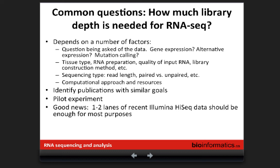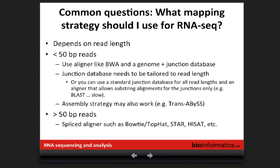The throughput of the HiSeq platform continues to increase — you can get a remarkable amount of RNA sequencing from a single flow cell nowadays. We're basically assuming everyone is using Illumina; ion torrent is becoming quite rare. The same general principles apply to other platforms but Illumina is now the safe assumption.